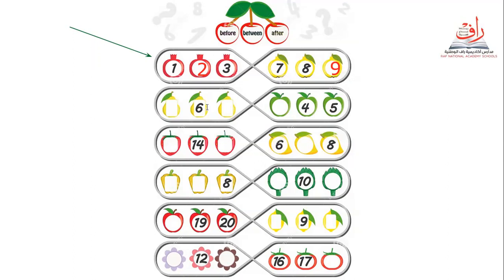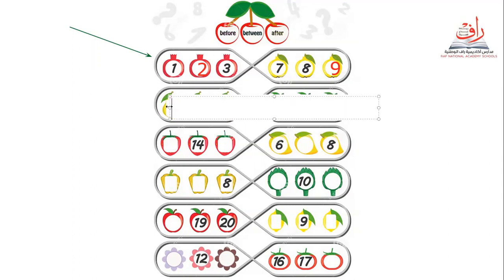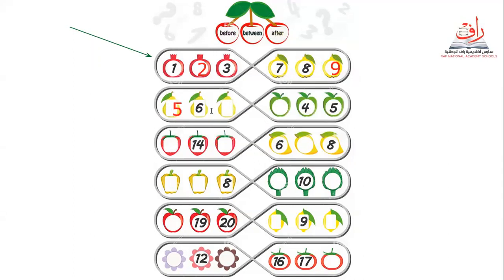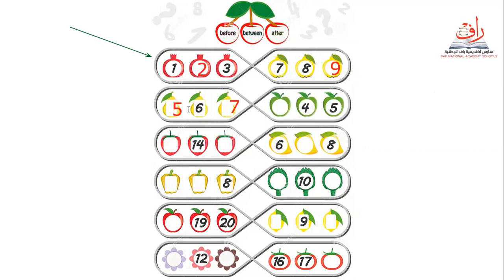Let's go next. We have number six in the middle, between the numbers. Before number six, what do we have? Five. Good job. And after number six? Seven. Excellent, super! Five, six, seven. Excellent.